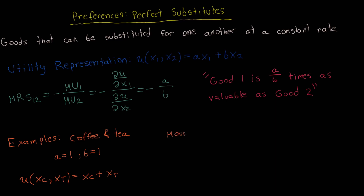The next example is movies and television shows. Suppose a consumer has a certain amount of time they can allocate between watching movies and watching TV shows. However, movies tend to be a little bit longer than TV shows. Suppose the consumer finds movies to be three times as valuable as TV shows because they can watch three TV shows in place of one movie. In that case, we use a equals 3 and b equals 1, so movies are three times as valuable as TV shows. The utility function, depending on hours spent watching movies and hours watching TV shows, is then equal to 3xm plus xt.